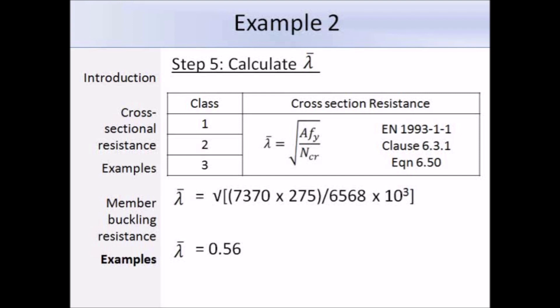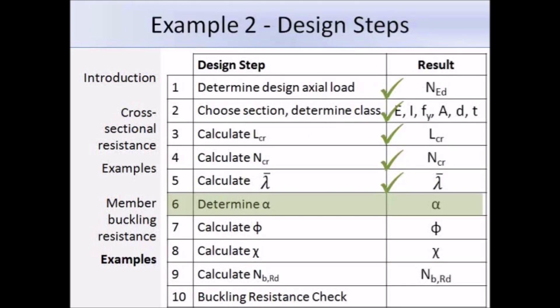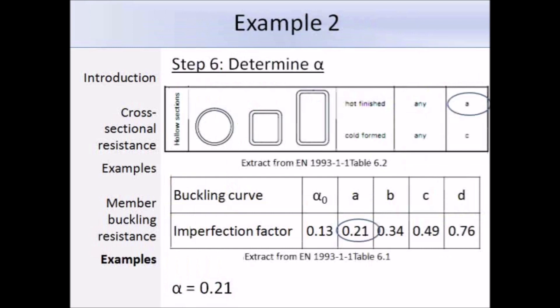The next step is to determine alpha. We refer to table 6.2 of the Eurocodes and find the part about hollow sections. Our section is hot finished, so we use buckling curve A. From table 6.1, buckling curve A gives a value of α = 0.21.